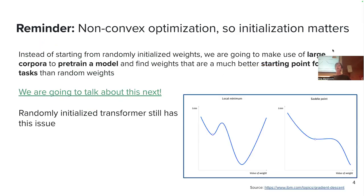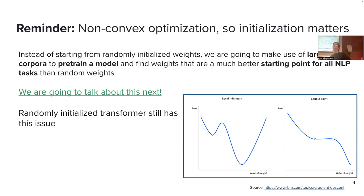Another thing we need to handle is the fact that we are using gradient descent, but our problem is not actually convex — meaning we don't have that nice convex function, like a quadratic function, where every time you go down you eventually hit the minimum and there is a global minimum. Instead, we have situations where we have valleys, saddle points, and so on. So where we start really matters.